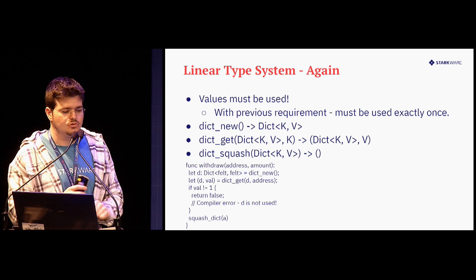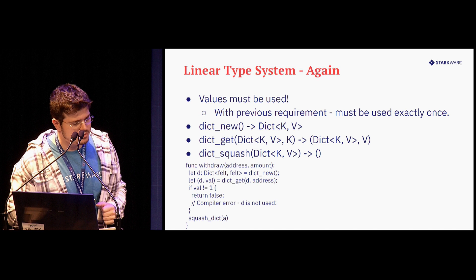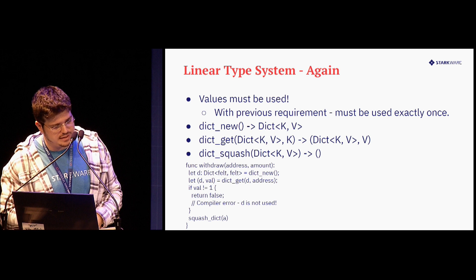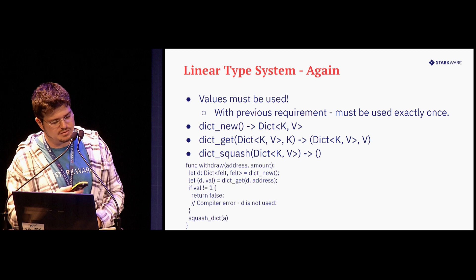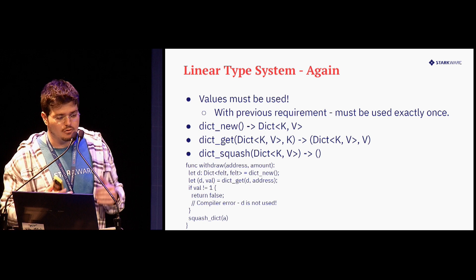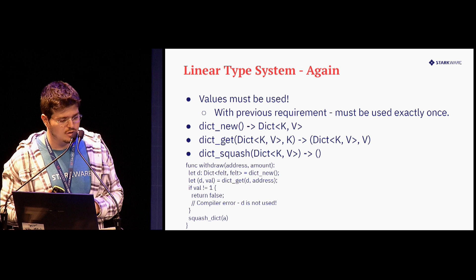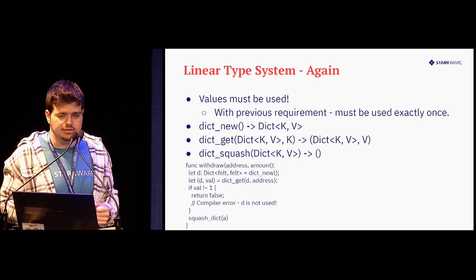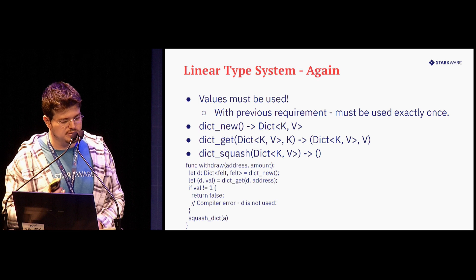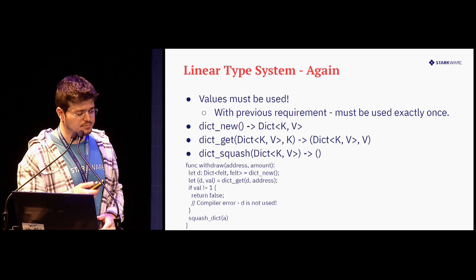Let's look at this example. I initialize a dict, I get a value, and I squash at the end — but there's a branch in the middle that does: if some condition, just return false. I want to revert. And I forgot to call squash_dict in the 'val doesn't equal one' branch. Here I will get a compilation error saying: 'D is not used in this flow — you must use every value.' The only way I can get rid of this value is by calling dict_squash. So I enforce this soundness and safety in Sierra.